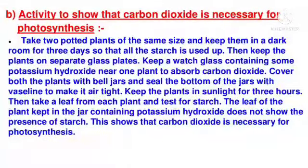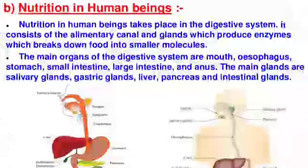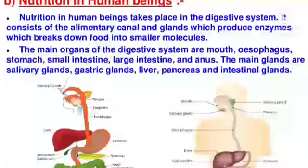Activity to show that carbon dioxide is necessary for photosynthesis: Take two potted plants of the same size and keep them in a dark room for three days so that all the starch is used up. Keep the plants on separate glass plates. Keep a watch glass containing potassium hydroxide near one plant to absorb carbon dioxide. Cover both plants with bell jars and seal the bottom with vaseline to make it airtight. Keep the plants in sunlight for three hours, then take a leaf from each plant and test for starch. The leaf of the plant kept with potassium hydroxide does not show the presence of starch, showing that carbon dioxide is necessary for photosynthesis.